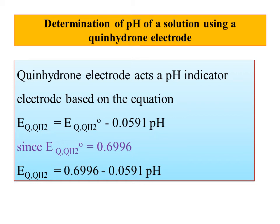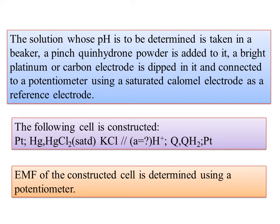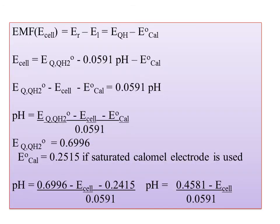A pinch of hydroquinone powder is added to the solution. A bright platinum or carbon inert electrode is dipped in and made in contact with a potentiometer using a saturated calomel electrode as a reference electrode. The cell reaction is: Pt | Hg₂Cl₂ | KCl || H⁺, Q/QH₂ | Pt. The EMF is measured using the potentiometer, and E(quinone) minus E₀(calomel) is used to calculate pH.